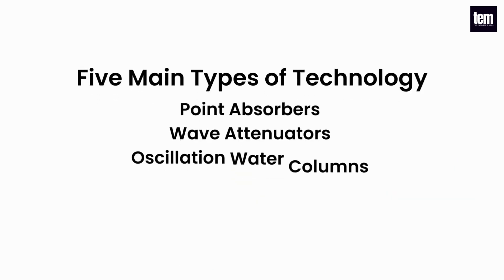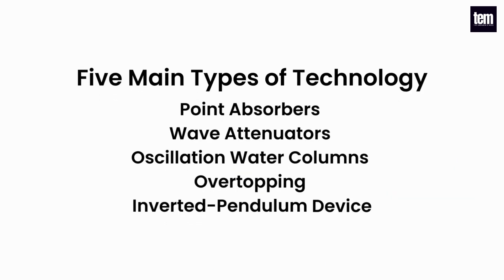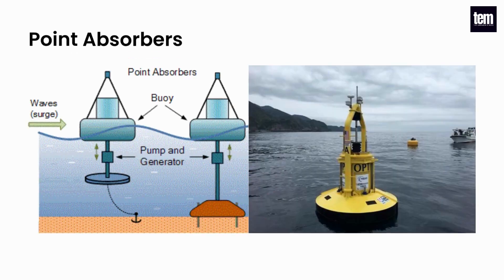There are five main types of technology used to generate wave energy: point absorbers, wave attenuators, oscillating water columns, overtopping, and inverted pendulum devices. Point absorbers are designed to extract energy from the rise and fall of the waves with a buoy. Once the energy is extracted, it is then converted into electrical energy with a linear or rotary generator.